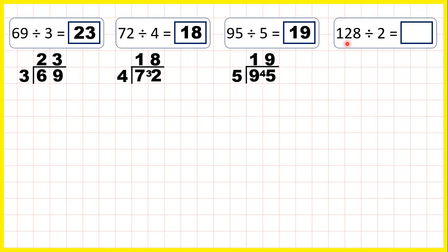Now 128 divided by 2. We can set this out in the same way, but we're going to do something slightly different here. If we take the first digit, we have 1 divided by 2, which is 0, remainder 1. But rather than doing that, if the first digit is smaller than the divisor, what you can do is take the first two digits together.